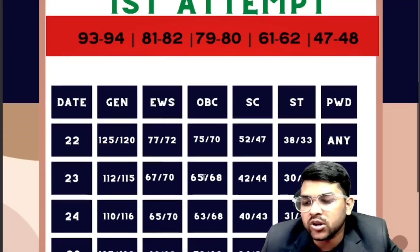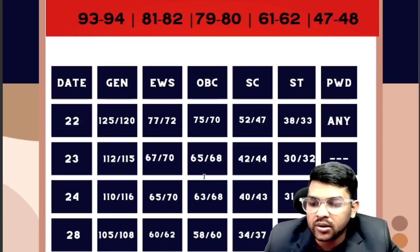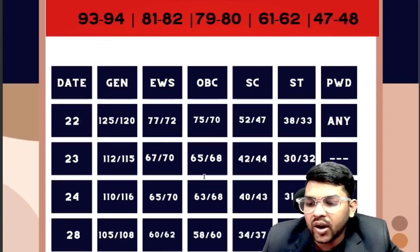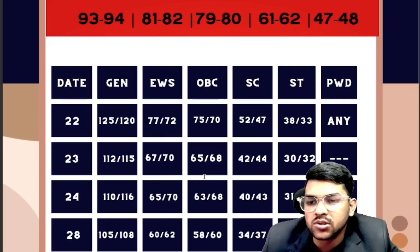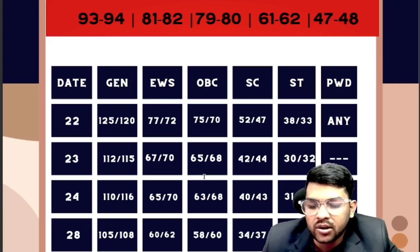For January 28th, General category requires 105 and 108 marks — this was one of the toughest shifts. EWS requires 60 and 62, OBC requires 58 and 60, SC requires 34 and 37, and ST requires 26 and 28 marks.